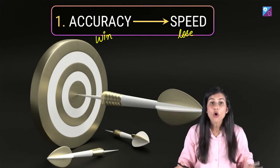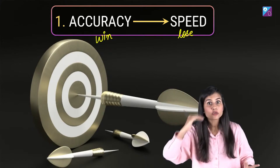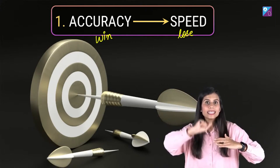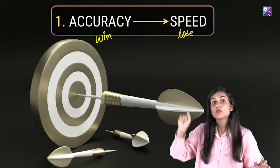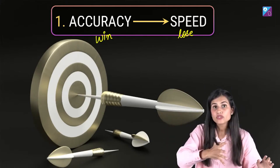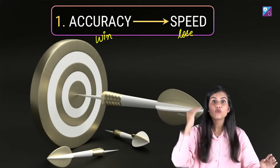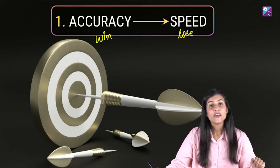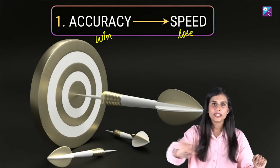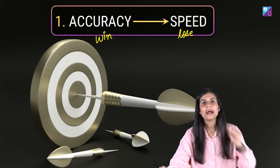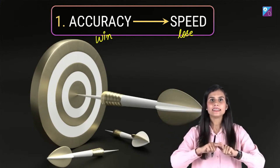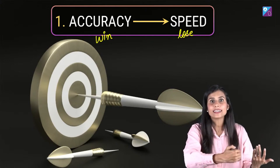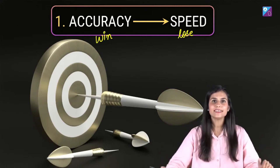Uske baad, next mock mein paanch sawaal ka target karo — get all five correct: five out of five, or twenty out of twenty — again a big boost to confidence. This is how slowly, gradually you increase the target. Very slowly — small wins will lead to the big win. Three questions, then five, then seven, then nine, ten, twelve. Very soon you will cross the benchmark and reach the milestone of 14–15 questions in one to one-and-a-half hours. You are acing the strategy of getting accurate faster, which is speed.